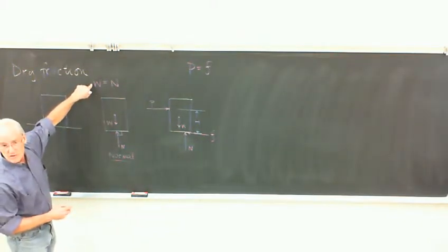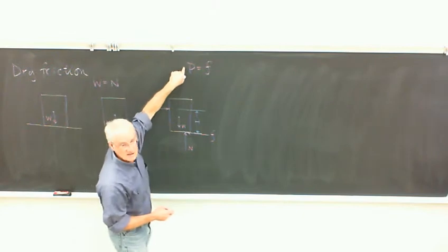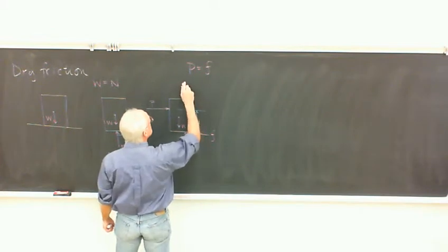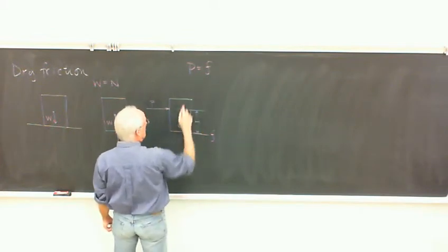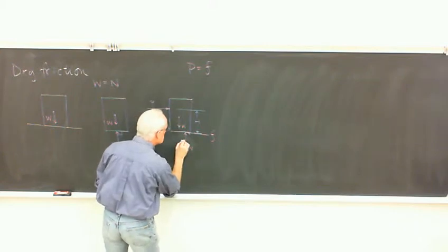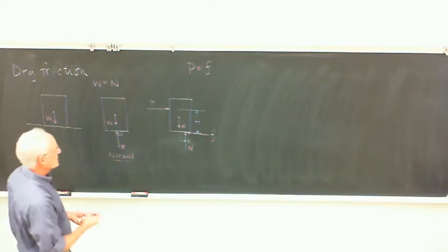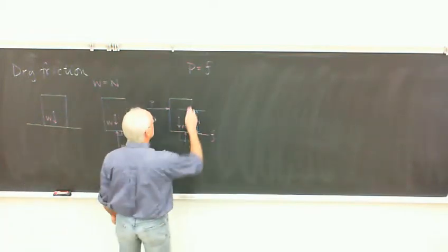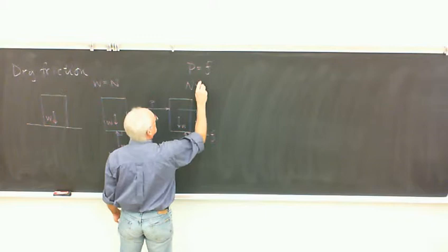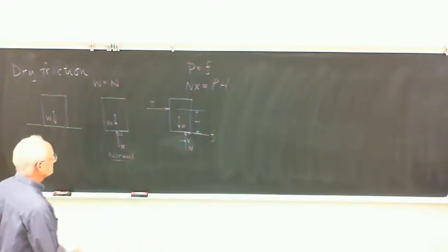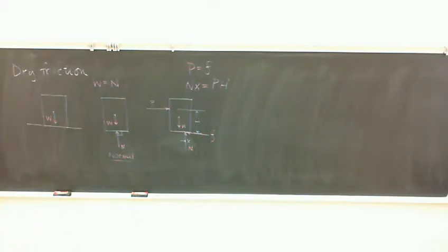This is the sum of forces in the y direction, the sum of forces in the x direction, and we also have to have a moment balance. We know that N times x must equal P times h — or W times x equals F times h — because those are couples and the magnitudes are the same.